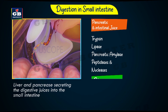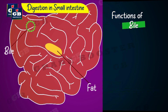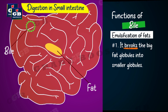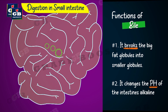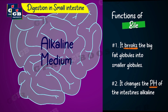Bile juice from the liver performs two important jobs. First, emulsification of fats — converting larger fat droplets into smaller fat droplets, which increases their surface area so enzymes can digest them more efficiently. Second, bile makes the intestinal pH alkaline, because an alkaline medium is required in the small intestine for the digestion of carbohydrates.